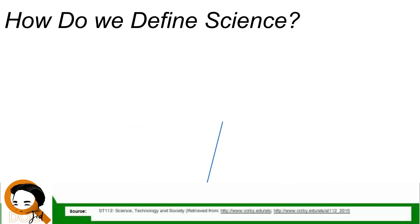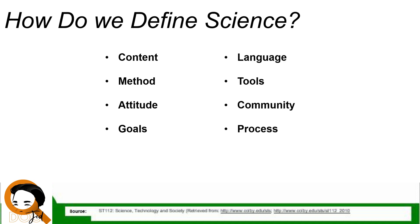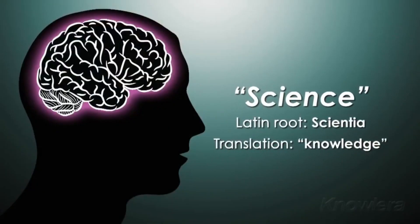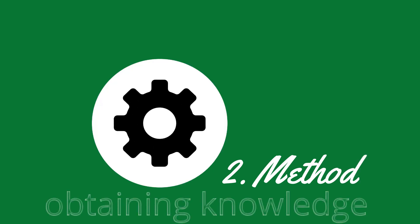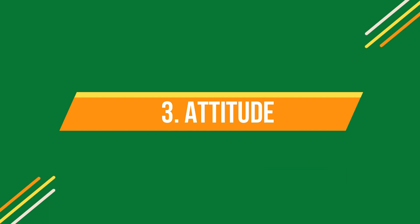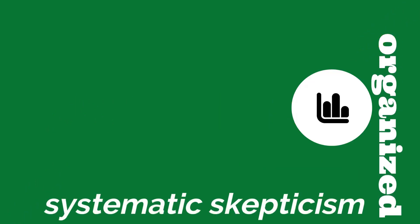How do we define science? By its content — organized knowledge about nature, from the Latin word 'scientia' meaning knowledge — and by its method: obtaining that knowledge through experiment, observation, hypothesis, theory, and law.